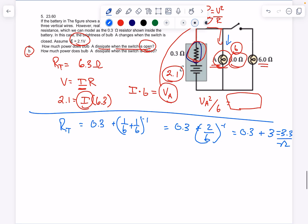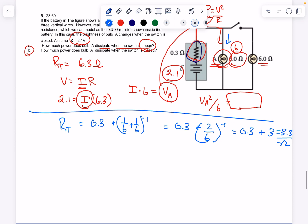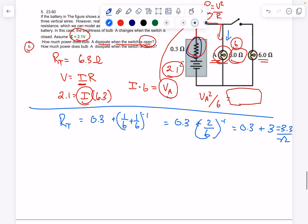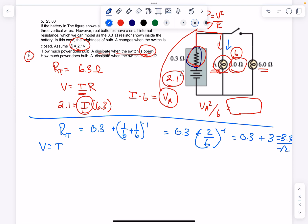So that's the total resistance of this full circuit. Then I want to find what is the total current through the system. V equals IR, so 2.1 equals I times 3.3. I can find I total.